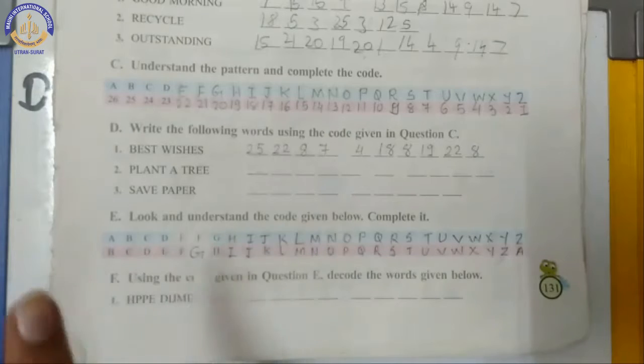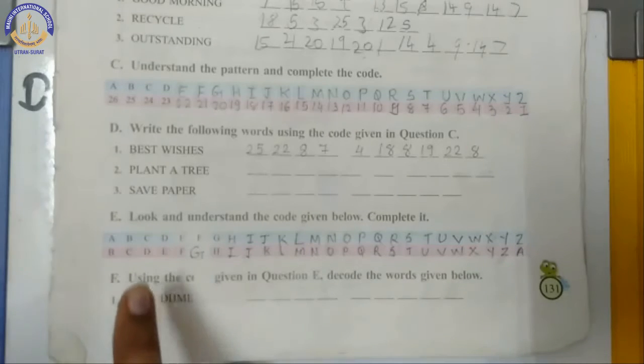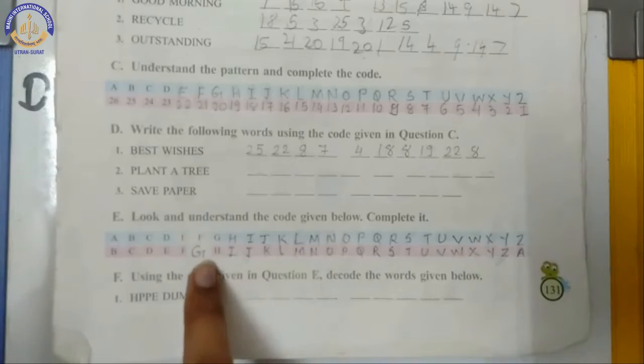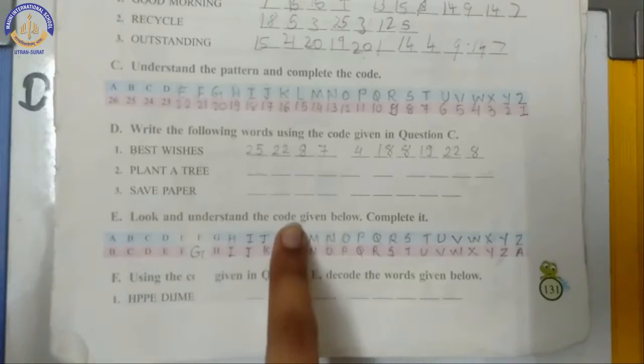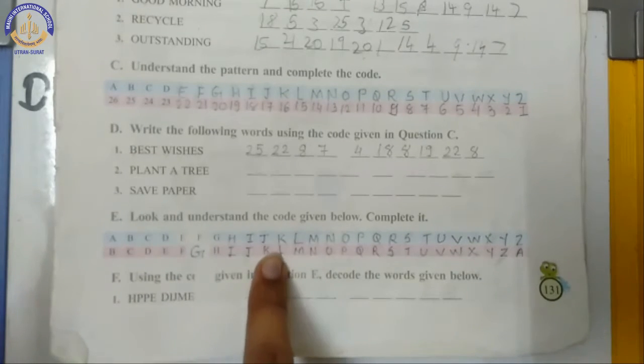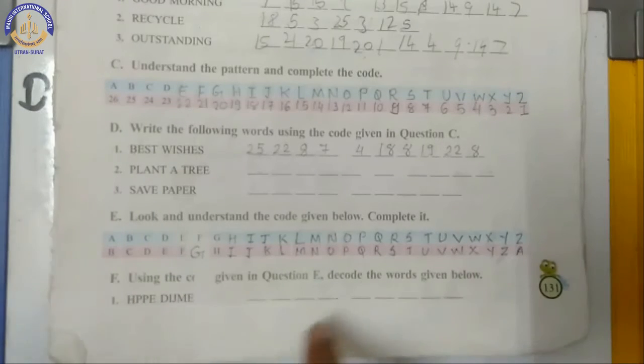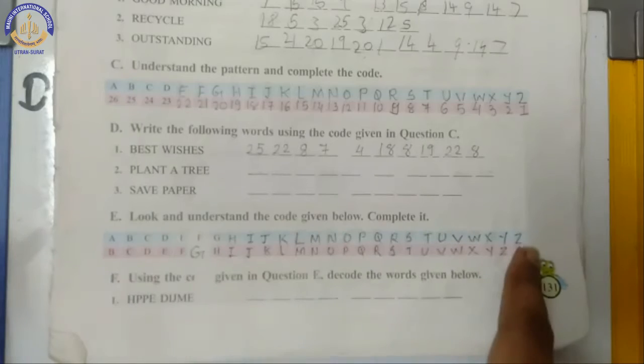When we code the message, then if we give F, then we will write G. When we give J, then we will write K. When we code the message, we will check the link below and when we decode the message, we will check the link above. So let's take an example first.